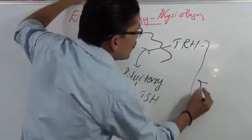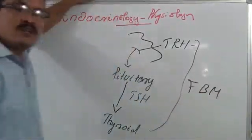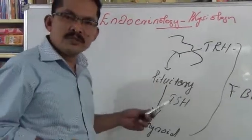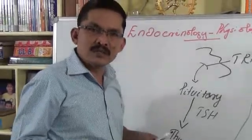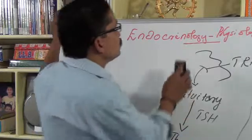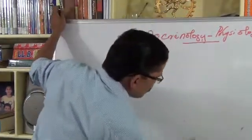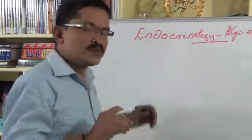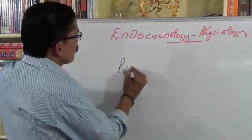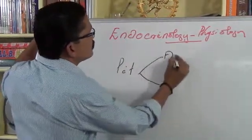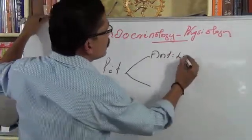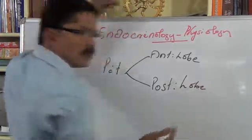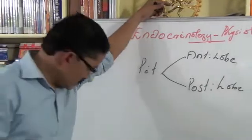Likewise, hypothalamus also regulates, or the pituitary also regulates our other endocrine glands. Let us see how the pituitary regulates the other endocrine glands. As you know, the pituitary is having two lobes: one is the anterior lobe of the pituitary, and next is the posterior lobe.